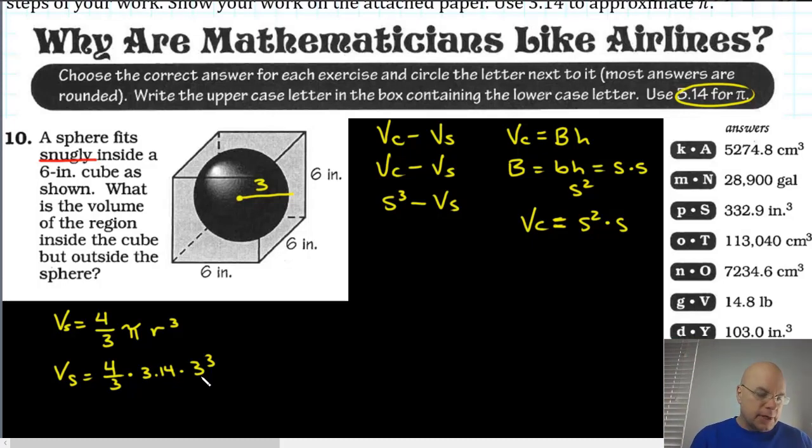On your calculator you type 4 divided by 3. If you're using the TI-30X2S, it'll look like a fraction as soon as you say 4 divided by 3. And then you multiply by 3.14, multiply by 3. I already know, you know, you probably know what 3 cubed is also. 3 times 3 times 3 is 27.